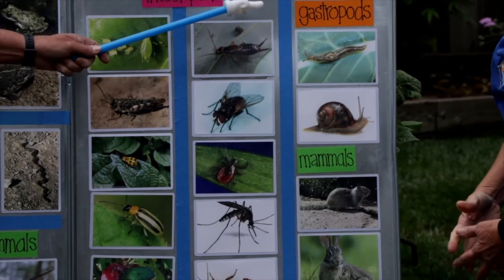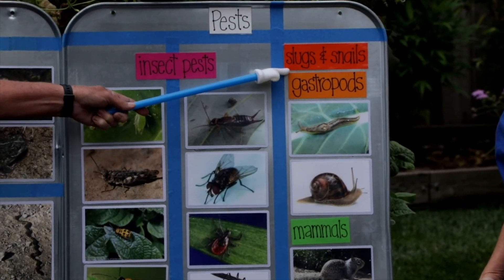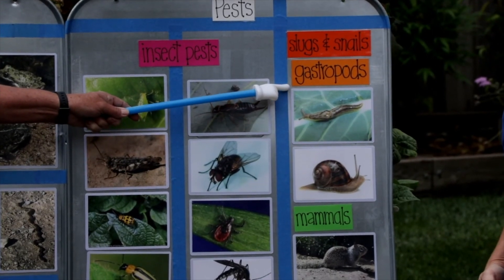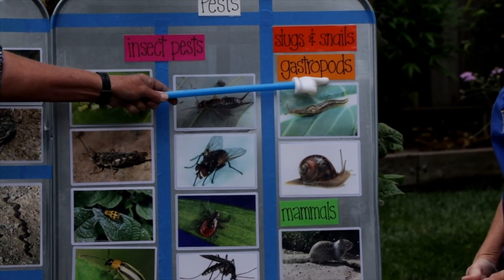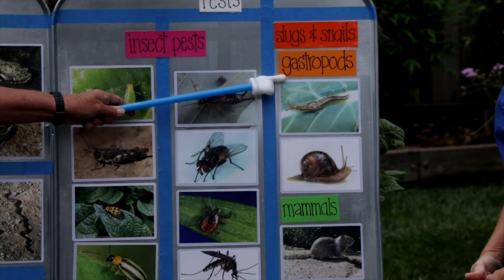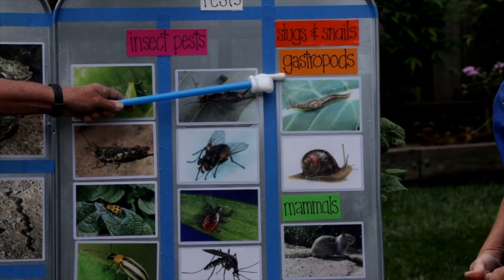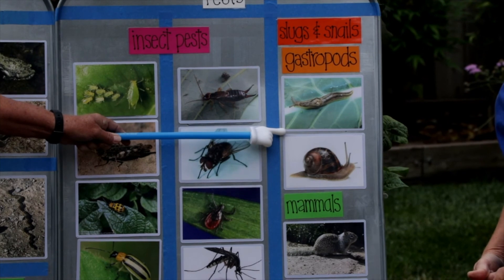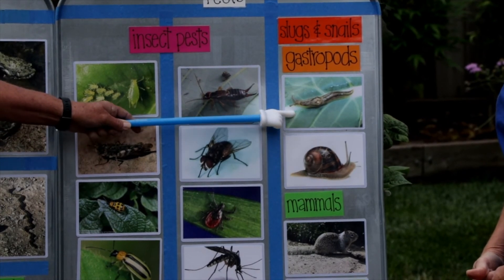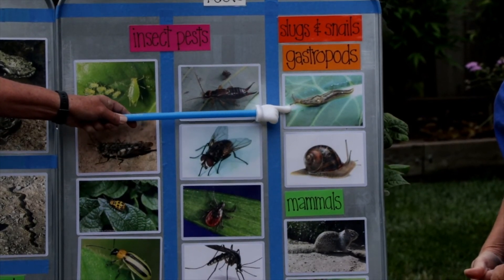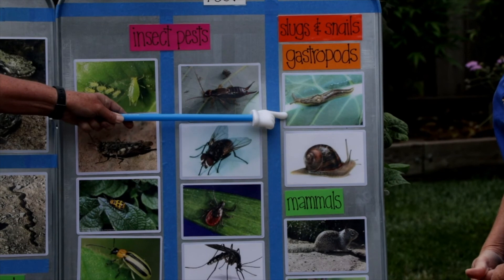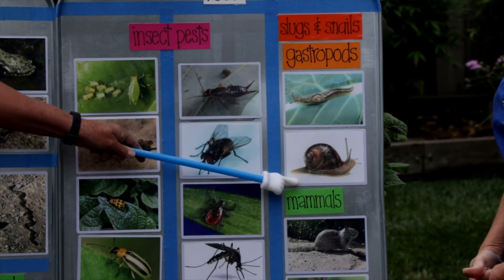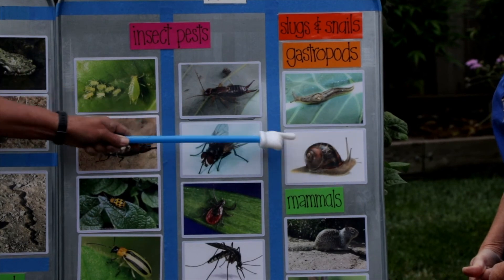The next category of pests are slugs and snails. Everything in science has a fancy word — the fancy word for slugs and snails is gastropods. Mostly they come out when there's moisture in the evening and nighttime hours. You can go out and get them out of your garden or trap them. A slug is a critter without a shell, and a snail carries that shell with it.